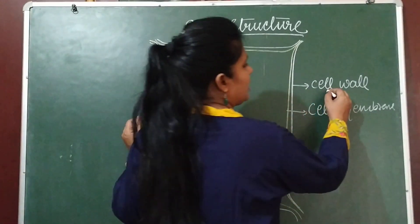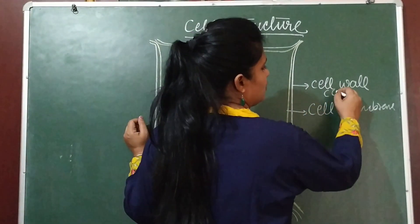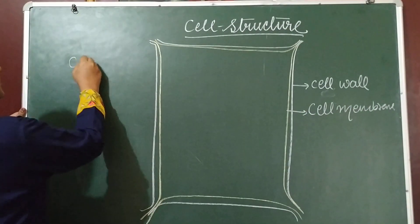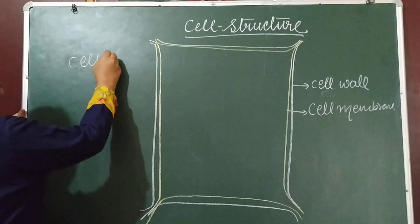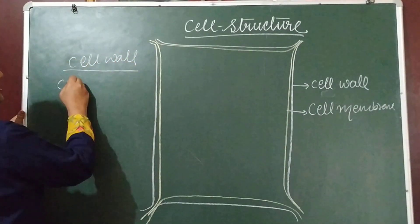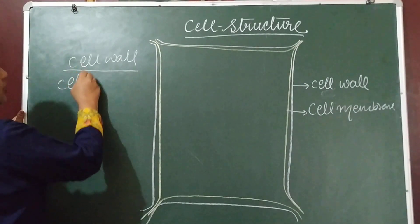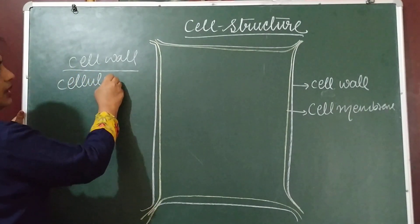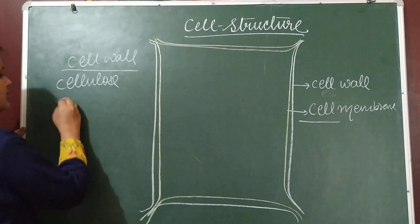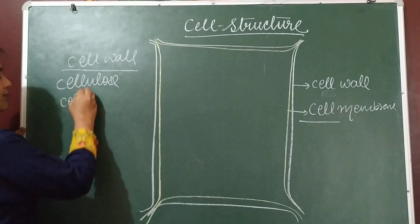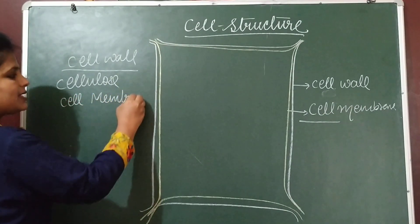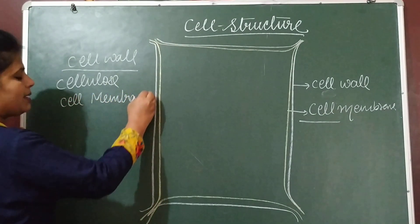This cell wall is made up of cellulose. Cell membrane is also known as plasma membrane, and it is made up of protein and lipids.